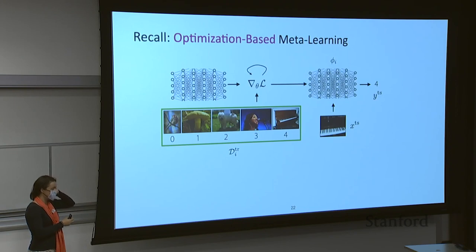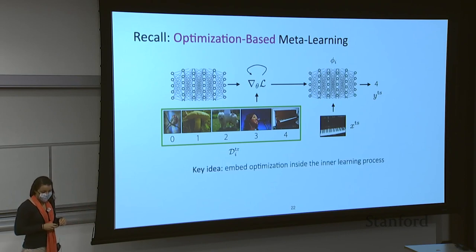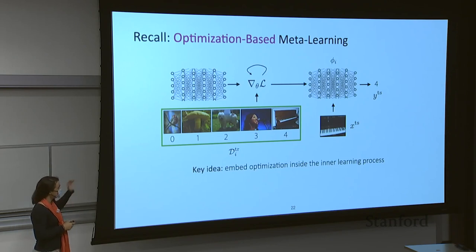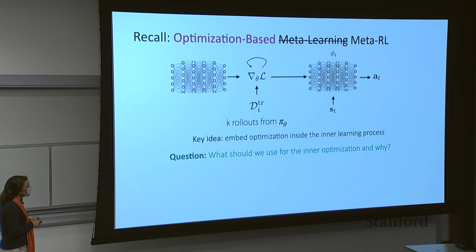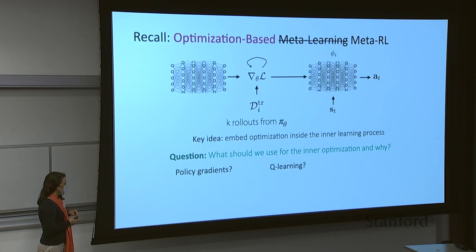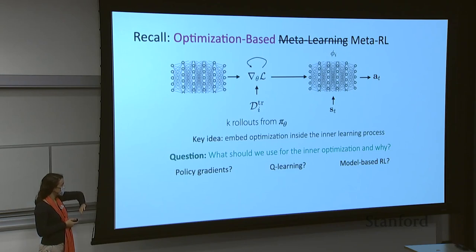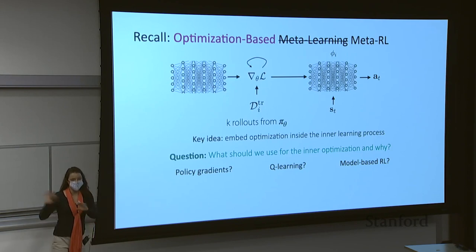Since black box meta-learning can be difficult to optimize, one approach is to build the structure of optimization into the meta-learner. To turn this into a meta-RL algorithm, we have choices for the inner loop optimization: policy gradients, Q-learning, or model-based RL. Trade-offs include: policy gradients can be very sample inefficient in the inner loop; with a large state space and inaccurate model, model-based RL may fail if the support set doesn't cover the relevant parts of the state space; and if all tasks share the same dynamics but different rewards, you don't need to adapt the model, so model-based MAML makes most sense when dynamics vary across tasks.